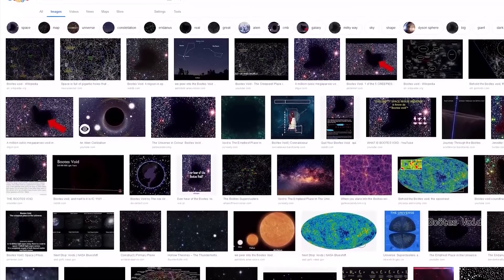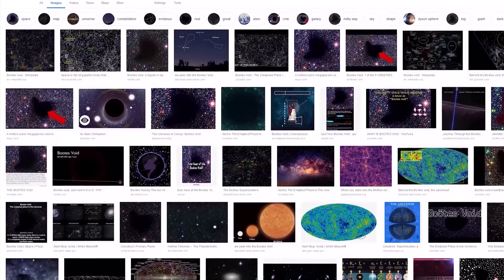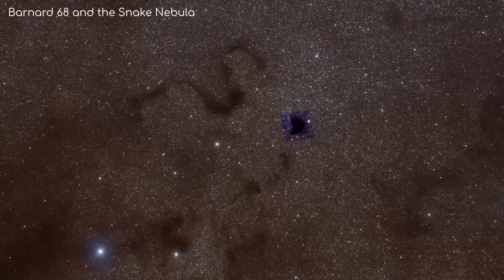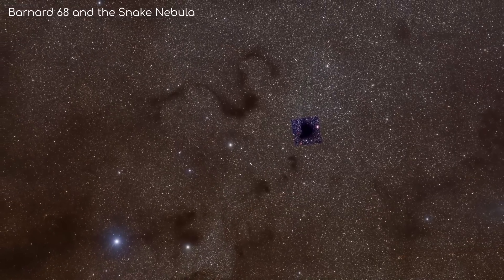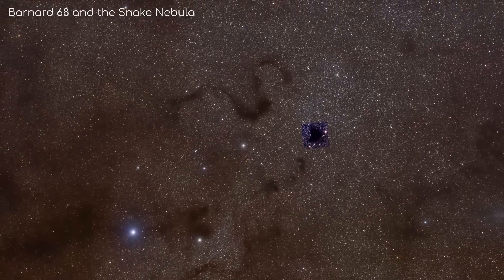You will find so many results from Google showing a dark, empty area at Boötes Void, but that's actually a dark nebula Barnard 68, which doesn't allow light to pass through.